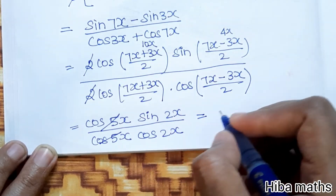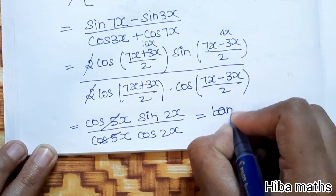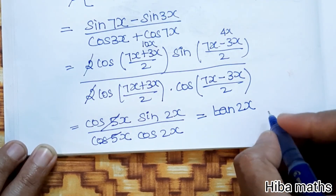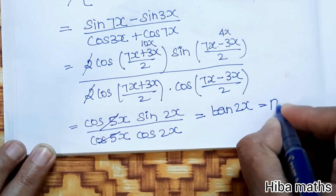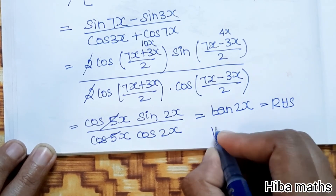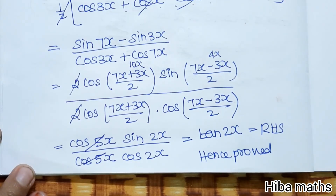After cancellation, we are left with sin 2x divided by cos 2x, which is tan 2x — the RHS. Hence proved. If you have any doubts, please put them in the comment section. Thank you so much for watching.